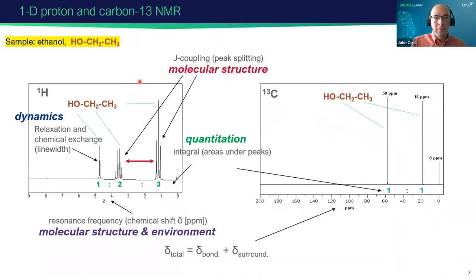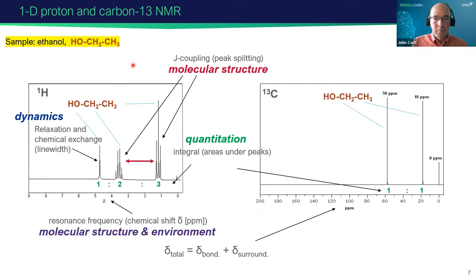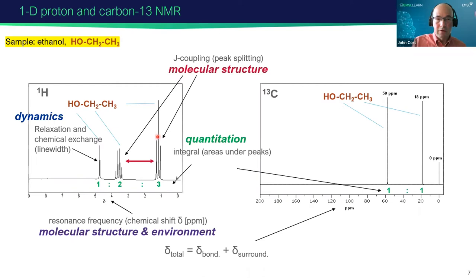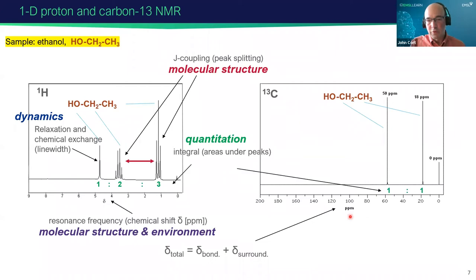If you took organic chemistry, you might remember seeing some 1D spectra like I'm showing here. This is the proton and carbon spectrum of ethanol, a very simple molecule, and it's possible to determine structures of molecules from 1D spectra. The frequency axis — the x-axis — is in a normalized frequency scale called PPM, which we also call chemical shift. It's a normalized frequency scale so that we can compare data from instruments operating at different magnetic field strengths.